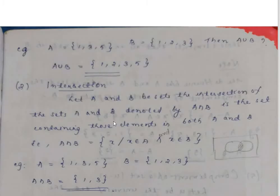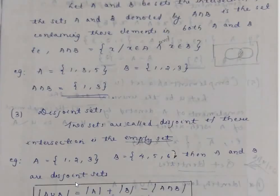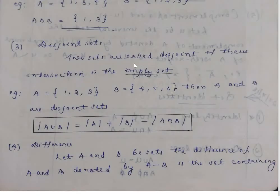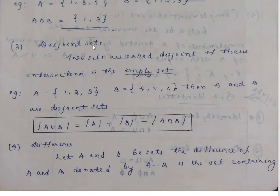Intersection: A intersection B contains elements that are in both A and in B. Two sets are called disjoint if their intersection is the empty set. The cardinality formula: cardinality of A union B equals cardinality of A plus cardinality of B minus cardinality of A intersection B. If A and B are disjoint, cardinality of A union B equals cardinality of A plus cardinality of B.